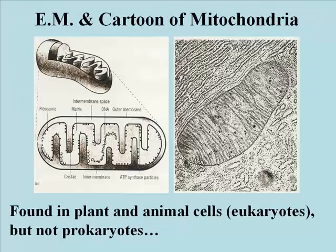Let's look at mitochondria. In animal cells, these are the next largest organelle. Like nuclei, mitochondria are surrounded by two membranes — an inner one and an outer one.